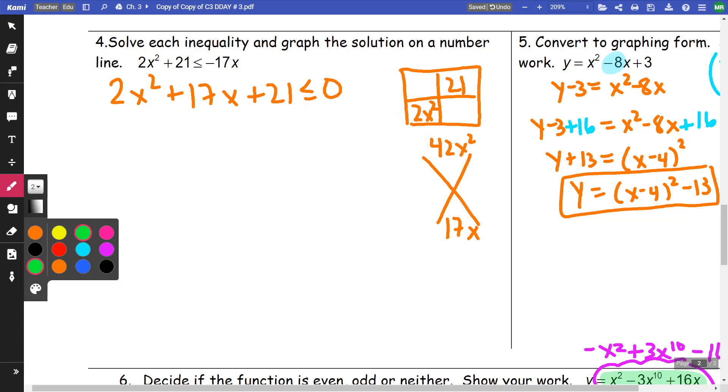So 42, to think about the 42, 6 times 7 is 42. 6 and 7 don't add up to 17.